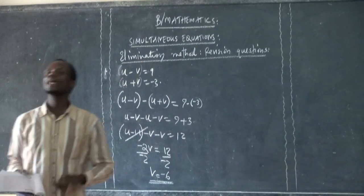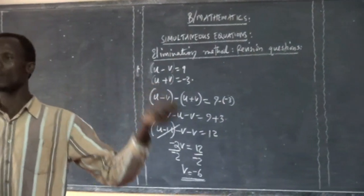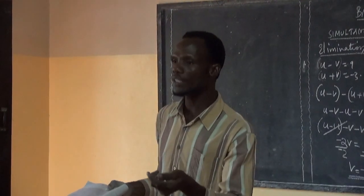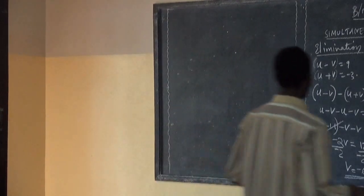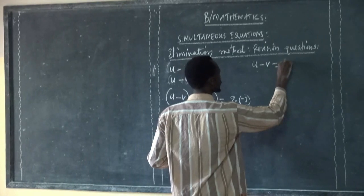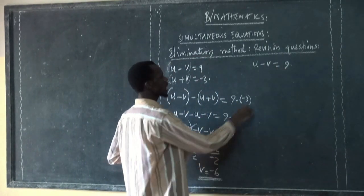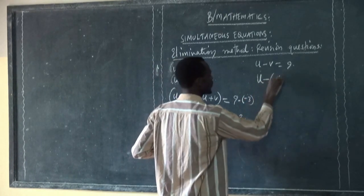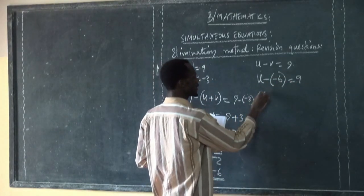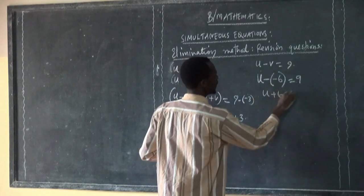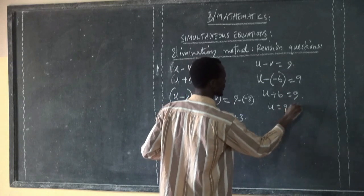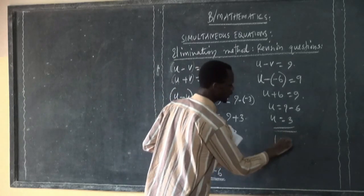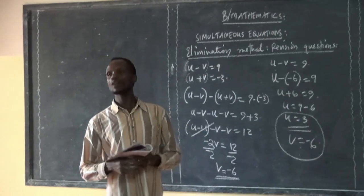Remember, in the elimination method there is no restriction in choosing the equation — you choose one of them. If you like the first equation, just choose it; if you like the second, just choose it. From the first equation, U minus V is equal to 9. Where there is V, substitute negative 6. So U minus negative 6 equals 9. Negative times negative gives positive, so U plus 6 equals 9. Therefore U equals 9 minus 6, which is 3. The value of U is 3 and the value of V is negative 6.